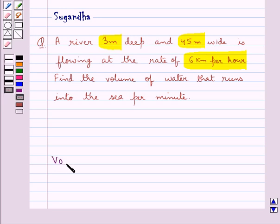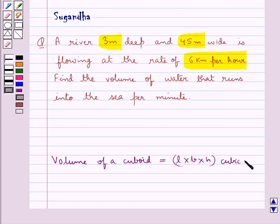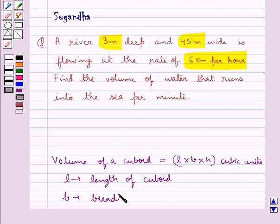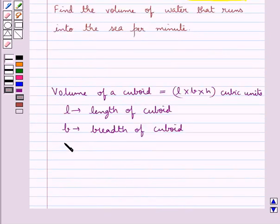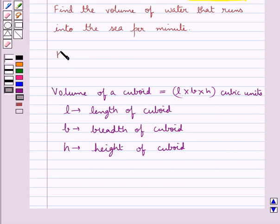Before we move on to the solution, we recall the formula for the volume of a cuboid. This is equal to L into B into H cubic units, where L is the length of the cuboid, B is the breadth of the cuboid, and H is the height of the cuboid. This is the key idea to be used for this question.